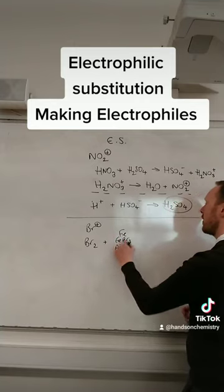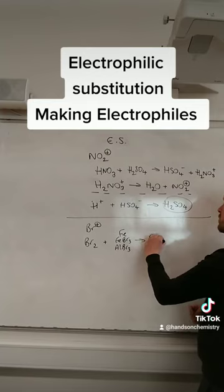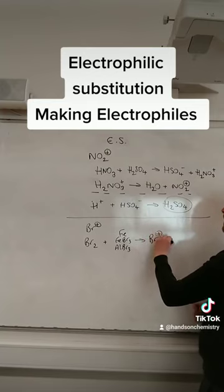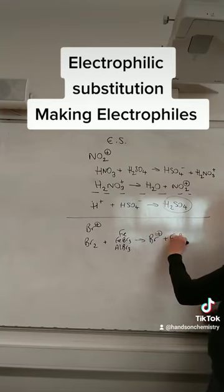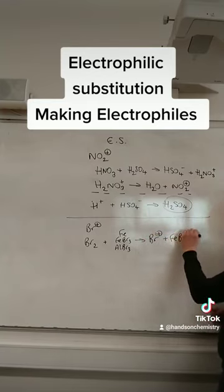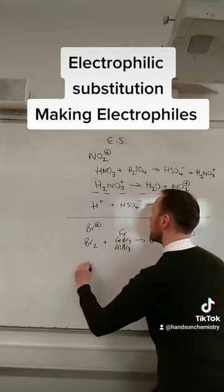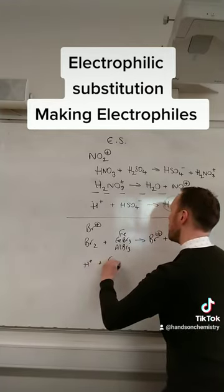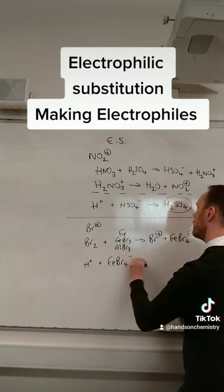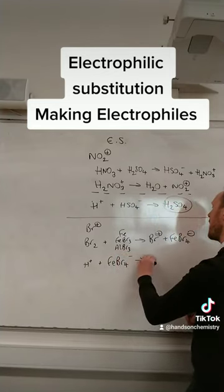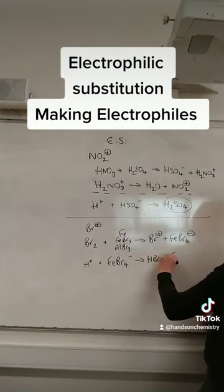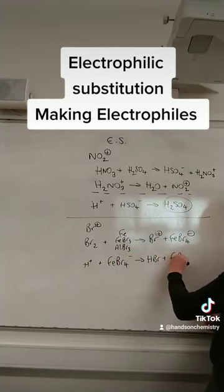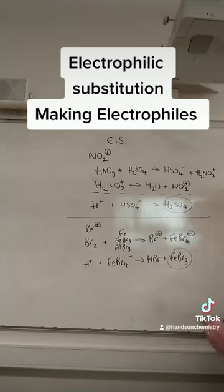I'll go for the FeBr₃ — you get the bromonium ion and you get FeBr₄⁻. At the end, H⁺ is formed, so H⁺ reacts with your FeBr₄⁻ and reforms it — you get HBr and FeBr₃ — therefore it's a catalyst.